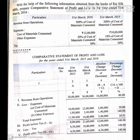Profit before tax has been found. Now we calculate tax at the rate of 50%. For 2015: 9 lakhs at 50% equals Rs. 4 lakhs 50,000. For 2016: 21 lakhs 60,000 at 50% equals Rs. 10 lakhs 80,000. Now we find profit after tax as profit before tax minus tax.